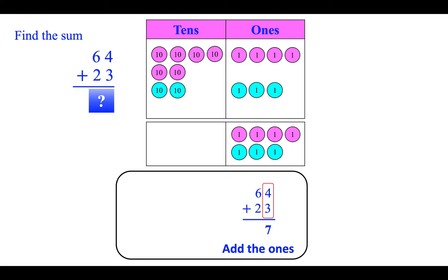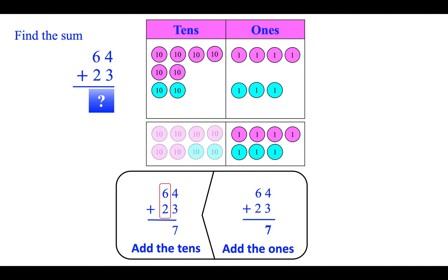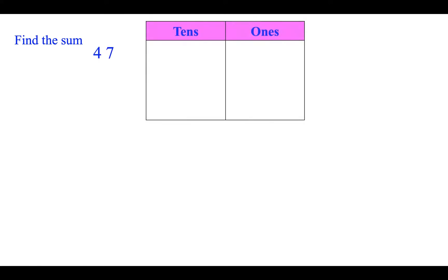Four plus three is seven. Then add the tens: six plus two is eight. The answer is eighty-seven. Find the sum: forty-seven plus twenty-five.